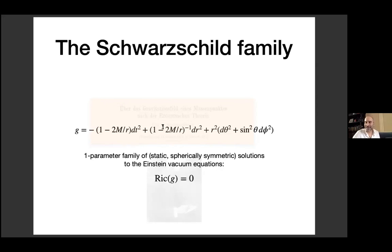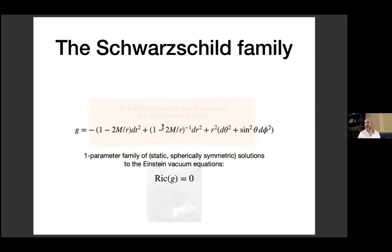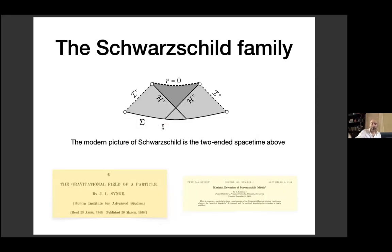The solution was discovered in December 1915, one month after the Einstein vacuum equations were first written down in their final form in November 1915. It was quite remarkable that this was discovered essentially immediately. It took a lot longer to understand its geometry and in particular to understand that this metric secretly represented what we now call the black hole spacetime.